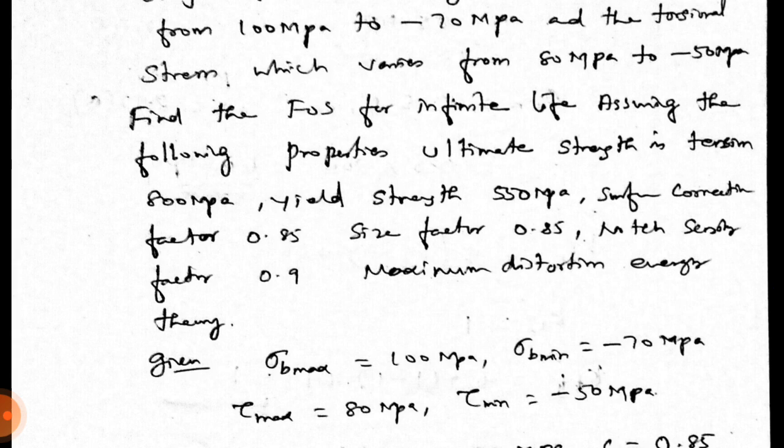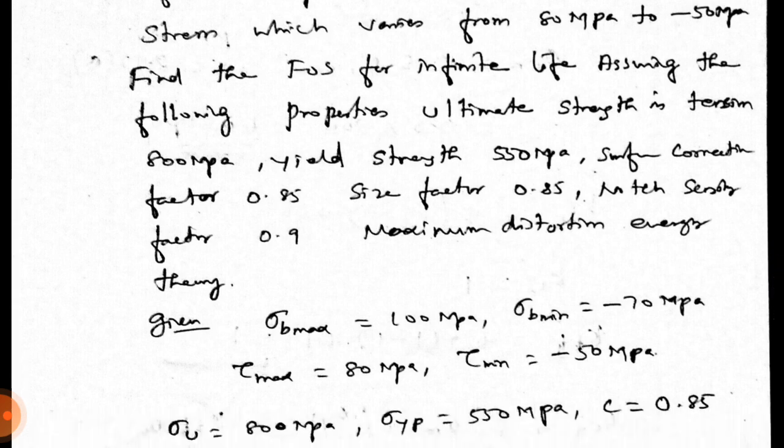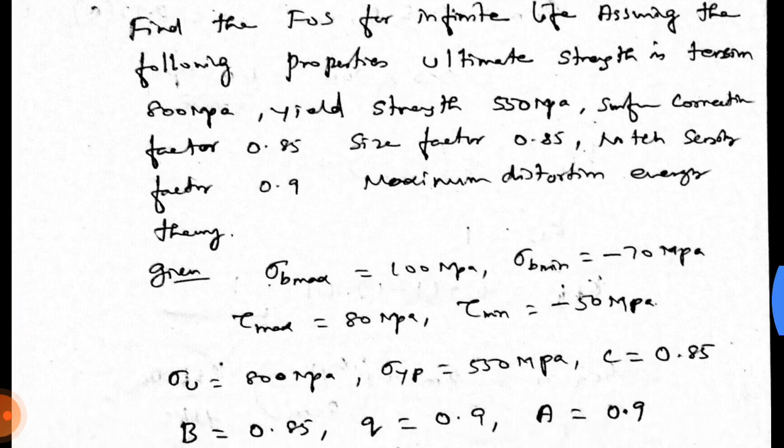Then, the torsional stress. Tau max is equal to 80 MPa. Tau minimum is minus 50 MPa. Then, Sigma U, ultimate strength in tension, 800 MPa. Sigma YP, yield strength is 550 MPa. Surface corrosion factor 0.85, size factor 0.85, notch sensitivity factor Q equals 0.9.